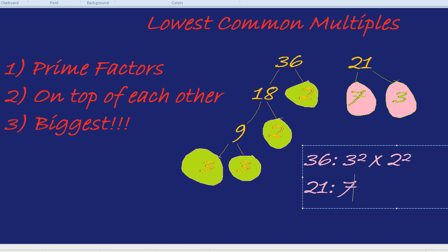21 is 7 times 3, but we need to write the 3 underneath the 3 squared, and the 7 doesn't have any match, so it goes on its own over here.